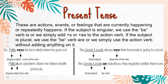Present tense. These are actions, events, or feelings that are currently happening or repeatedly happen. If the subject is singular, we use the verb "is", or we simply add "-s" or "-es" to the action verb. If the subject is plural, we use the verb "are", or we simply use the action verb without adding anything. Examples: Philip wears his face shield when he goes out. Philip is an obedient citizen. He follows health protocols. The grade 6 pupils always wear their face mask in going to school. The grade 6 pupils are industrious. They regularly sanitize their room.